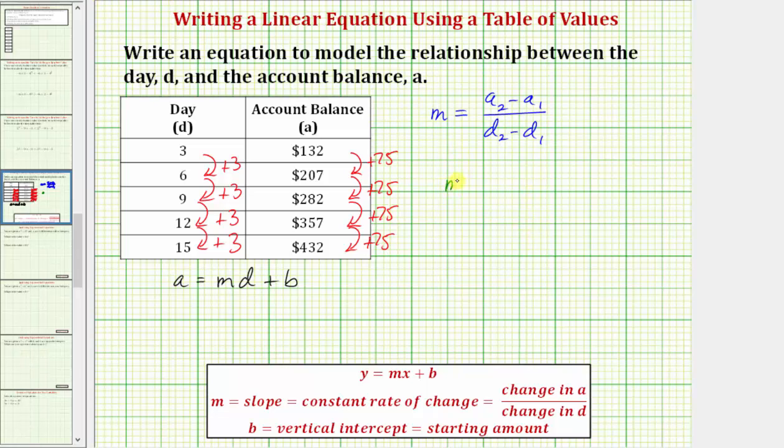When we're using X and Y, we normally write the slope M equals Y sub two minus Y sub one over X sub two minus X sub one, but again, we're using A instead of Y and D instead of X.